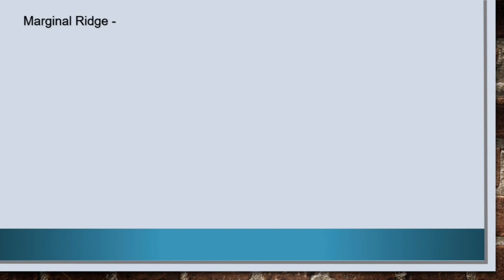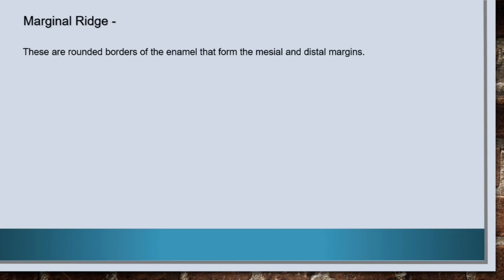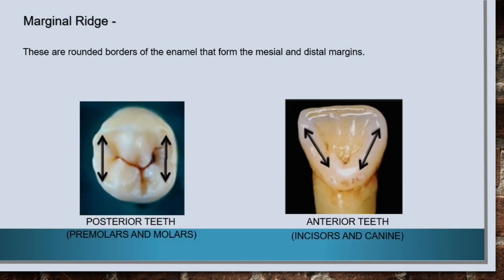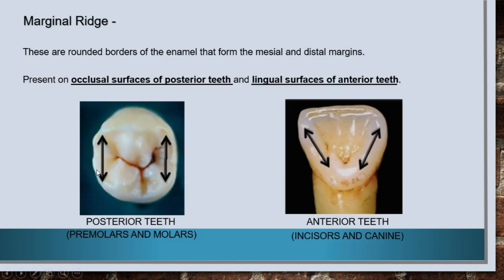First is marginal ridge. These are rounded borders of the enamel that form the mesial and distal margins. These are present on occlusal surfaces of posterior teeth and lingual surfaces of anterior teeth.